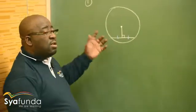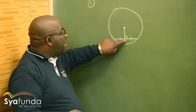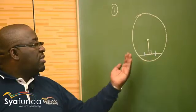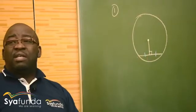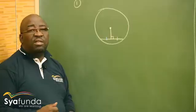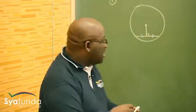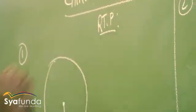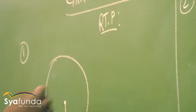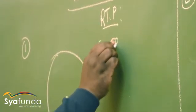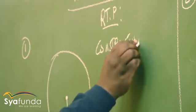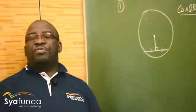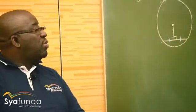So this theorem says: a line drawn from the center of a circle, perpendicular to a chord, will bisect the chord. All that we need to prove is to show that this side is the same as that side. Let's do the formal proof. Required to prove - RTP. We also need to have our construction. The construction is what you add on the diagram which was not there. When you do your construction, it is advisable that you do it in dotted lines.